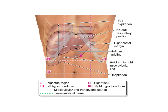The liver lies mainly in the right upper quadrant of the abdomen, protected by the thoracic rib cage and the diaphragm. It normally lies deep to ribs 7 through 11 on the right side and crosses midline toward the left nipple. The liver occupies most of the right hypochondriac region and the upper epigastric region and extends into the left hypochondriac region. The liver moves with the excursions of the diaphragm and is located more inferiorly when a person is standing, making it easier to palpate.